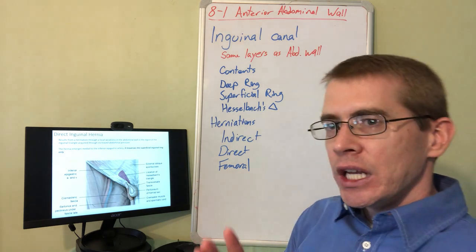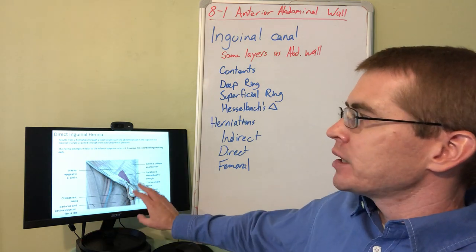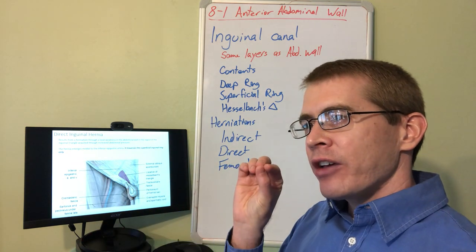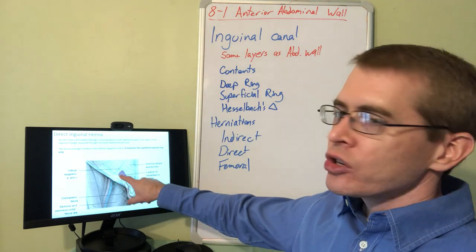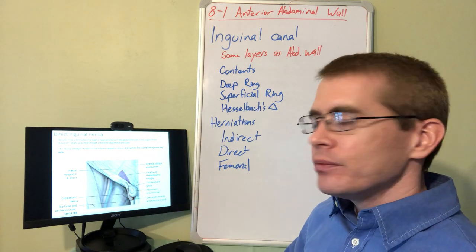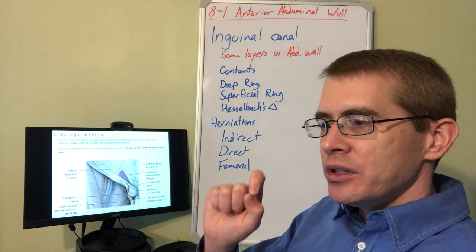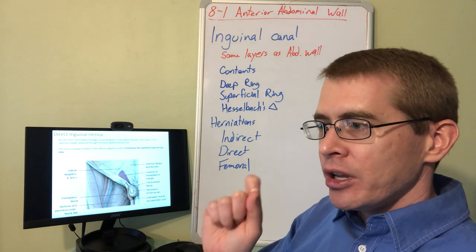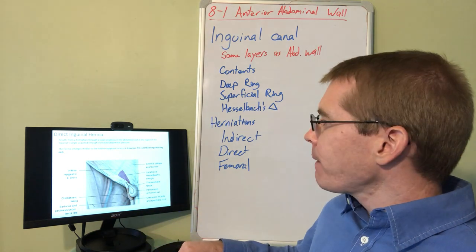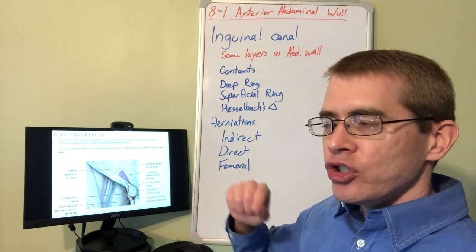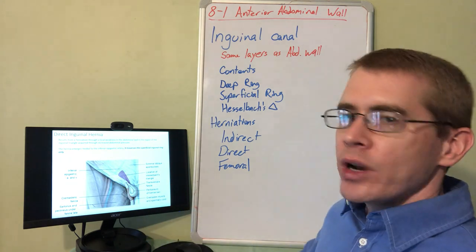A direct inguinal hernia is usually the result of increased abdominal pressure, such as from weightlifting. In a direct inguinal hernia, the abdominal contents directly pierce the transversalis fascia, typically in the weakened region known as Hesselbach's triangle. The direct inguinal hernia does not travel through the deep inguinal ring — it only travels through the superficial inguinal ring.